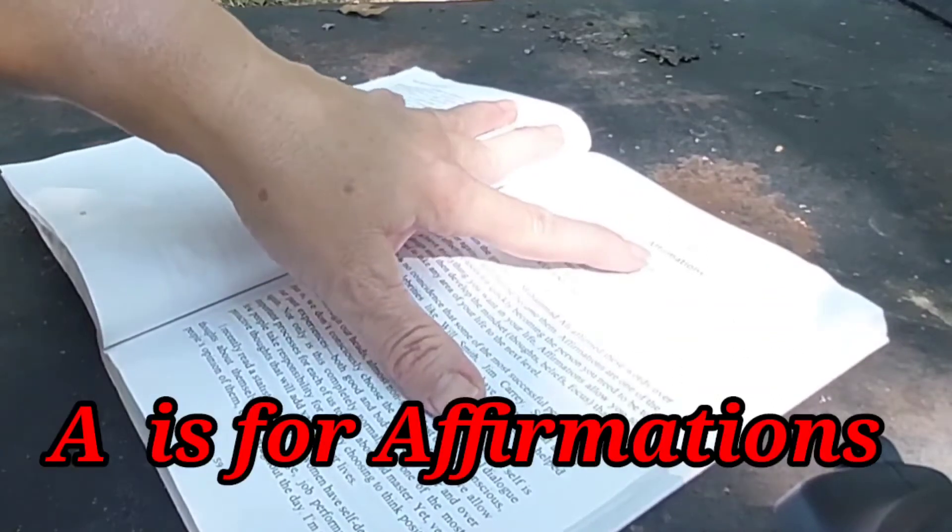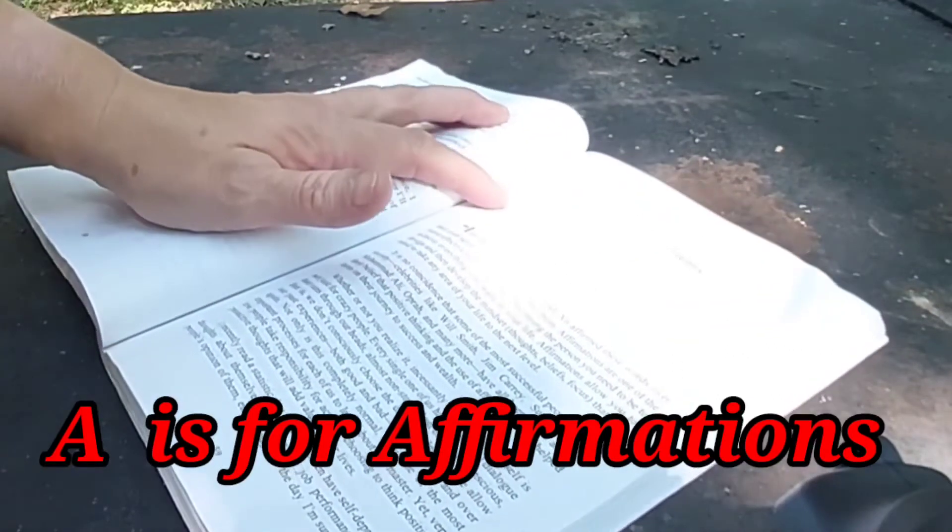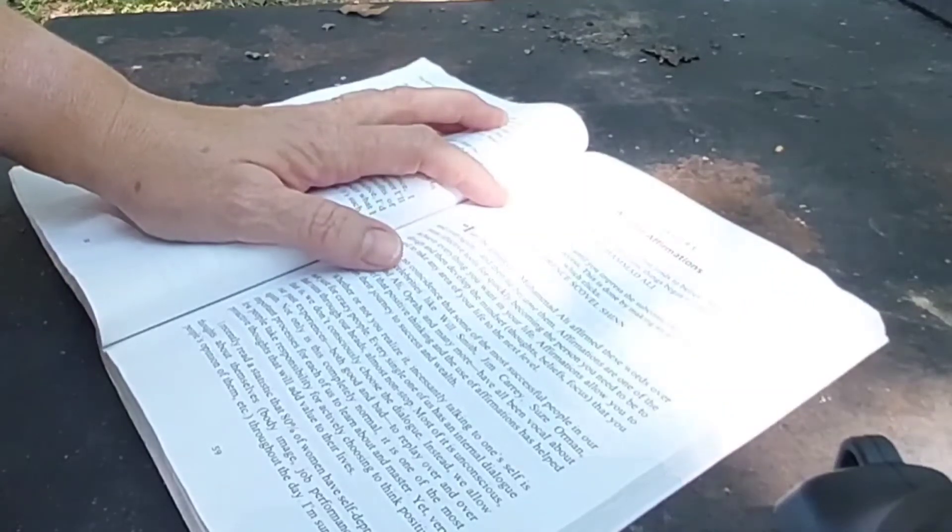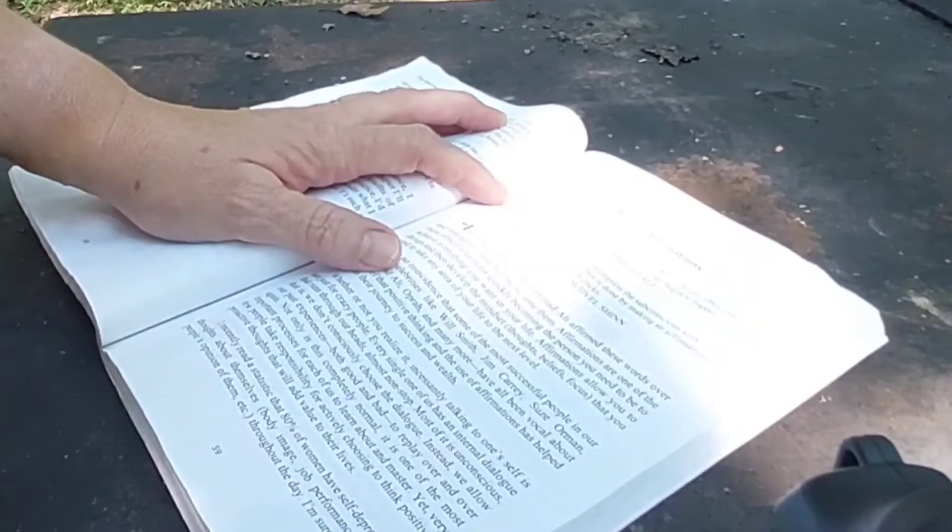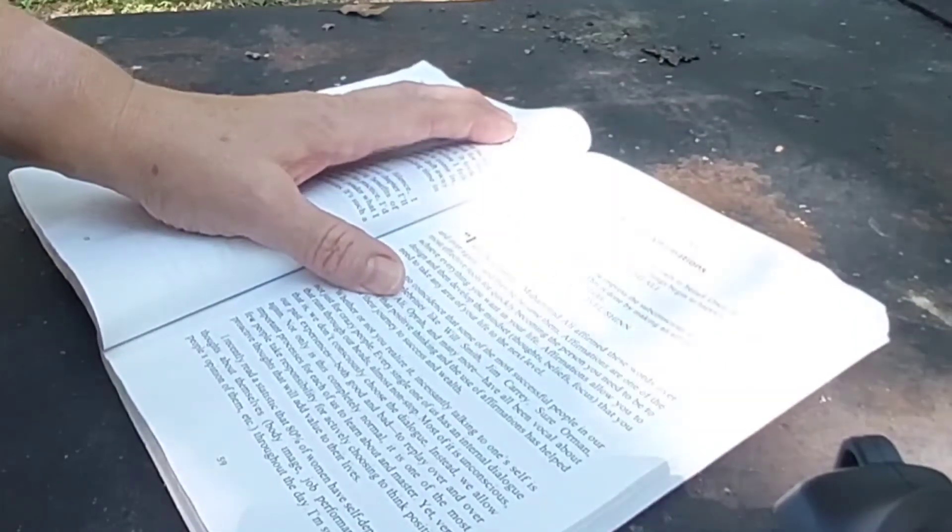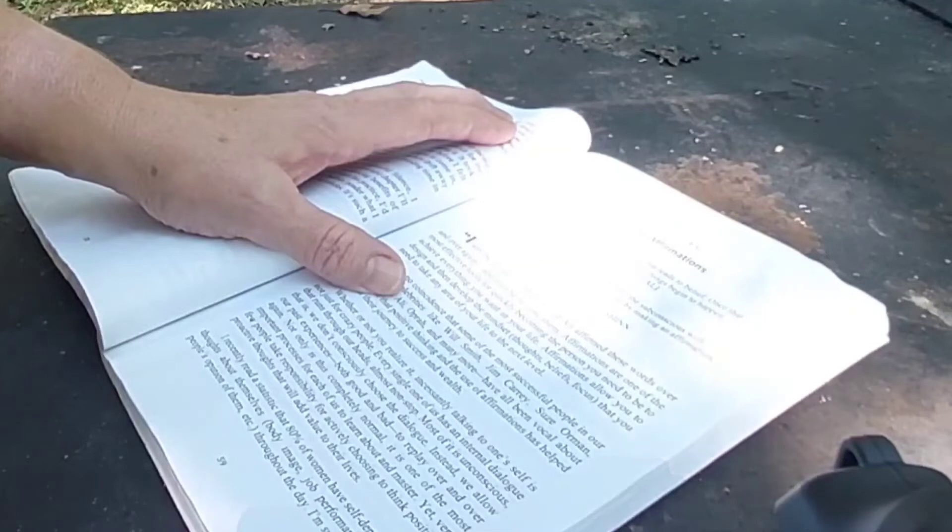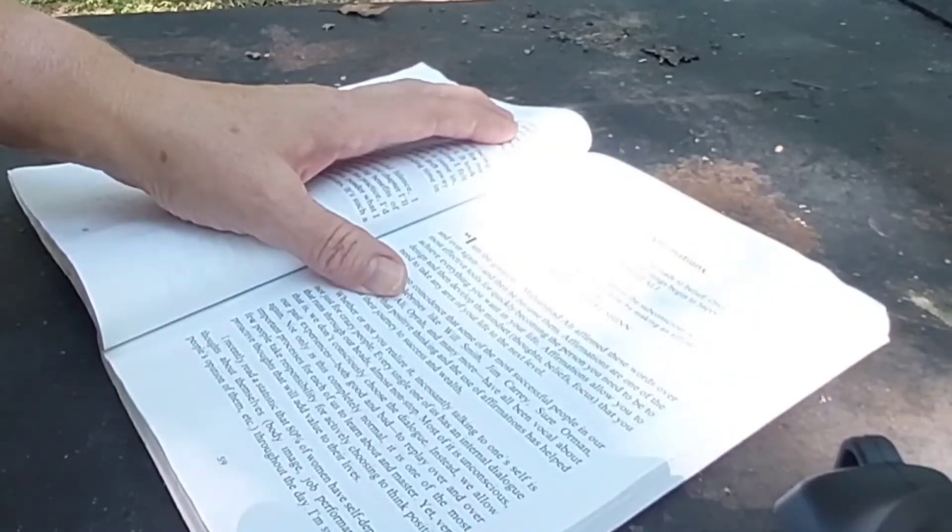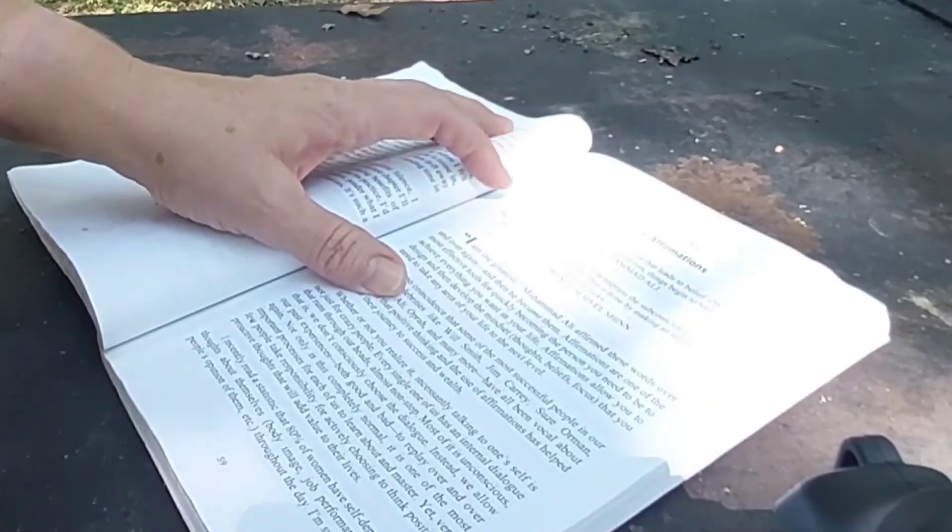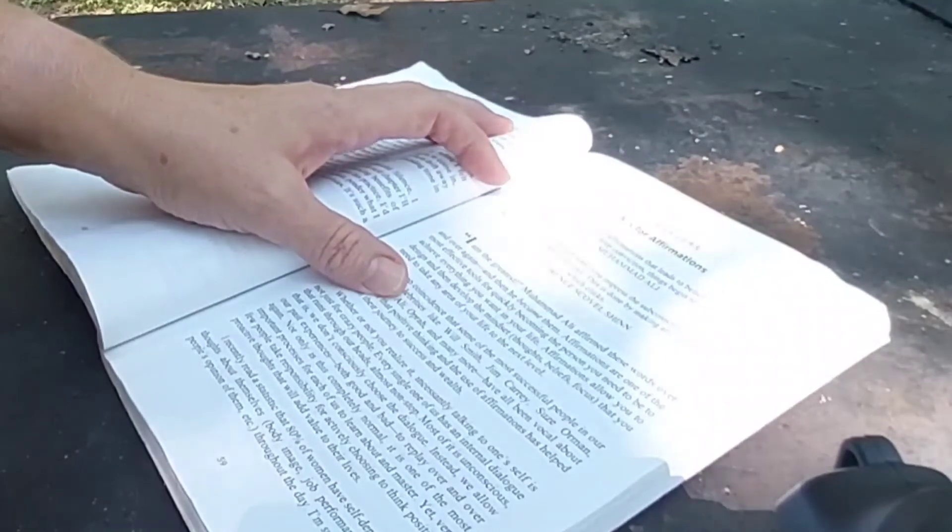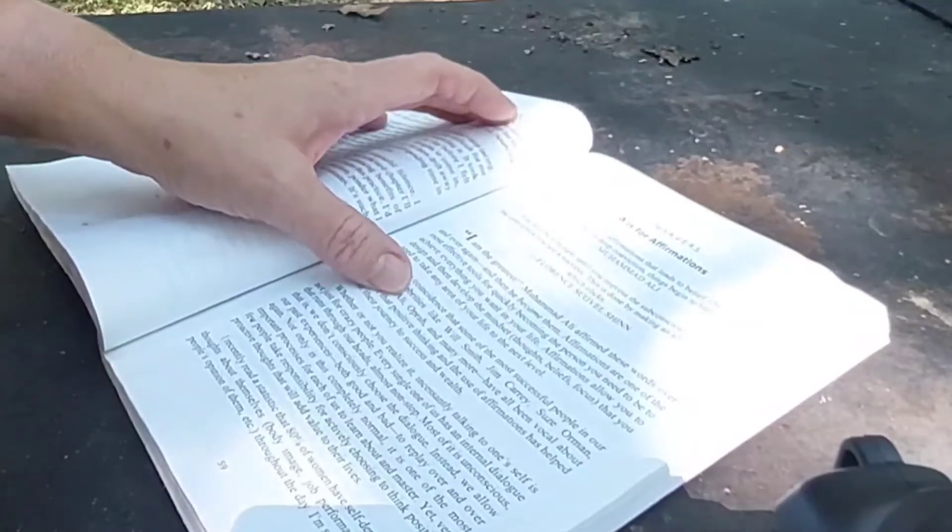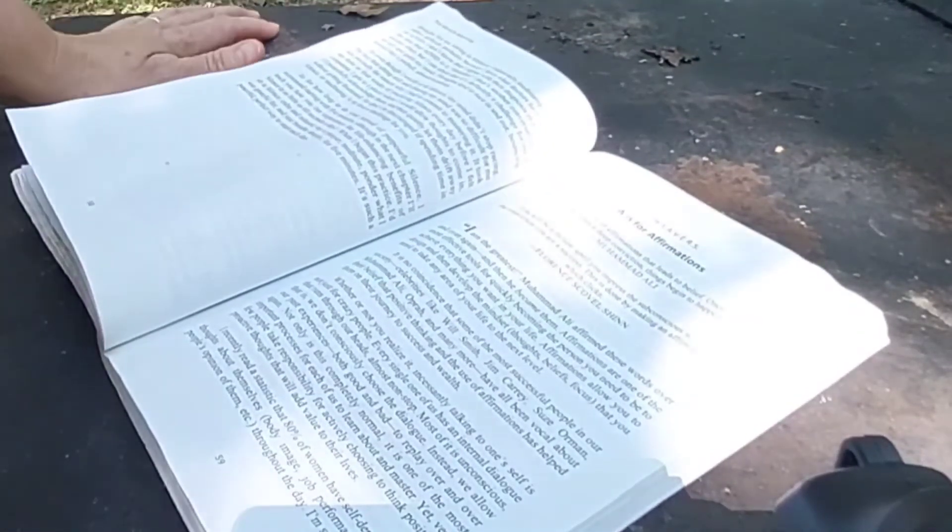A is for affirmations. It's the repetition of affirmations that leads to belief. Once the belief becomes a deep conviction, things begin to happen. Muhammad Ali. You will be a failure until you impress the subconscious with the conviction you are a success. This is done by making an affirmation which clicks. I'm going to reread that one. You will be a failure until you impress the subconscious with the conviction you are a success. This is done by making an affirmation which clicks. Florence Scovel Shinn.